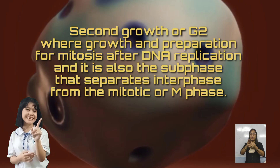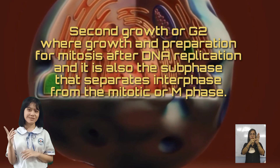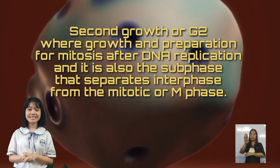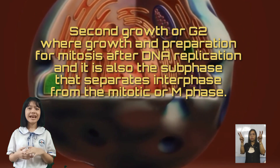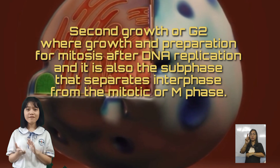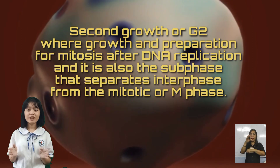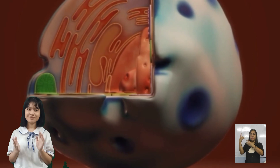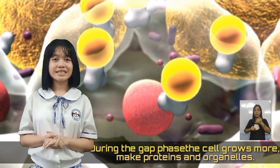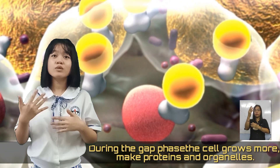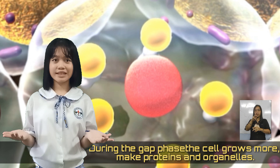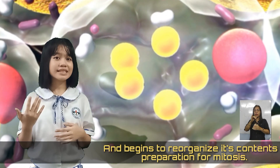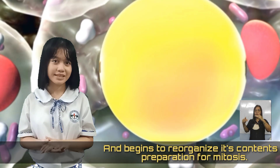Lastly, second growth or G2, is where growth and preparation for mitosis occurs after DNA replication. It is also the sub-phase that separates interphase from the mitotic or M phase. During the G2 phase, the cell grows more, makes proteins and organelles, and begins to reorganize its content in preparation for mitosis.